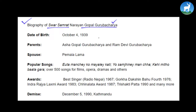We've been given different ideas — the date of birth of that person, the name of his parents, the name of his spouse, and what different kinds of popular songs he sang. The list is here, along with the awards and the date of demise. Everything is given in the question. Now what you should do is write a biography based on this information. Maybe you can write three paragraphs of biography — not more than that, because it is only for five or six marks.